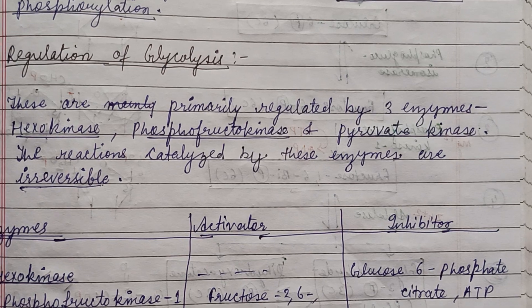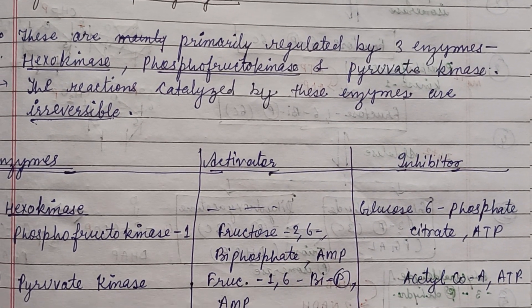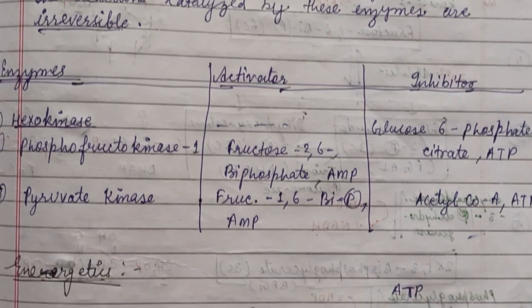Regulation of glycolysis mainly involves three enzymes: hexokinase, phosphofructokinase, and pyruvate kinase. These enzymes regulate the catalyzed reactions which are irreversible processes.